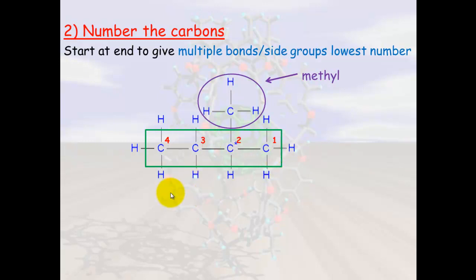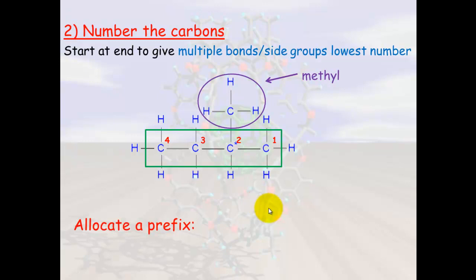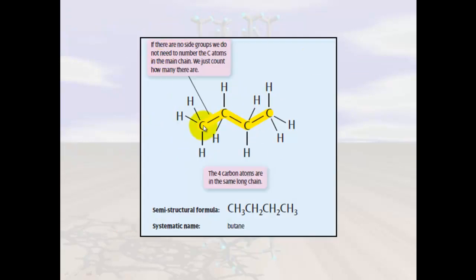We can now allocate a prefix. We've got the longest carbon chain with four carbons, so it gets the prefix butane. Remember: meth is one, eth is two, prop is three, and but is four. There are no double bonds so it will be butane. Note that if there are no functional groups and just a main carbon chain, there's no reason to number the carbons — we can just leave this as butane because there's only one possible structural formula for that.